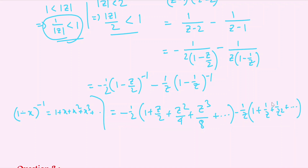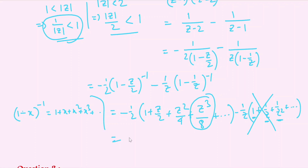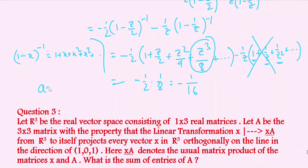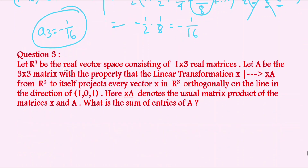Looking at the first series, there is a term with z³. The second series has terms 1/z, 1/z², 1/z³, ... (i.e., z⁻¹, z⁻², z⁻³, ...), so there is no z³ term there. From the first series, the coefficient of z³ is −(1/2) · (1/8) = −1/16. Therefore a₃ = −1/16.